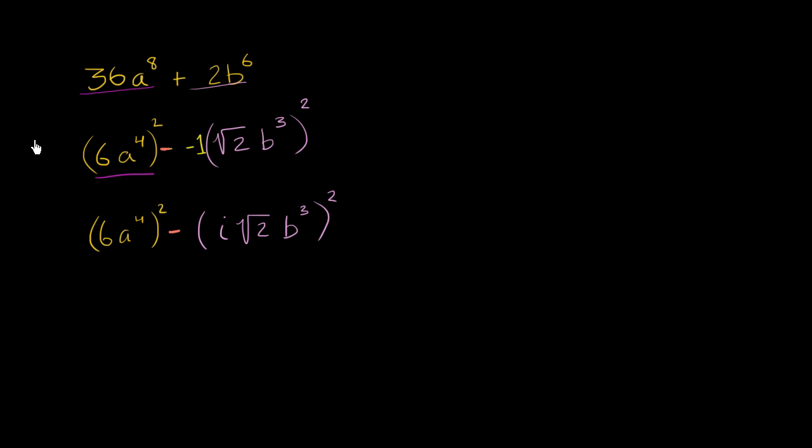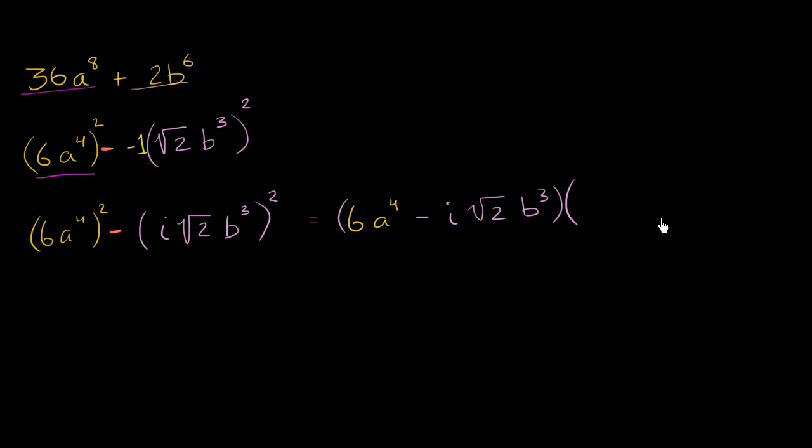And so now I've expressed it as a difference of squares, so we're ready to factor. This is going to be equal to 6a to the fourth minus i times the square root of 2 times b to the third, times 6a to the fourth plus i times the square root of 2 times b to the third power. And we are done.